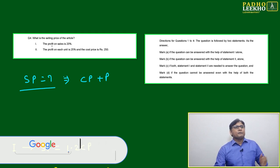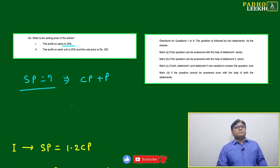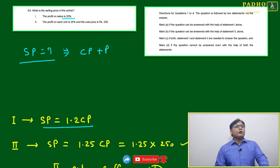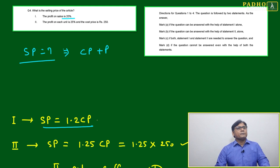Now, Statement I: profit on the sales is 20 percent. 20 profit is there means we can say selling price will be equal to 1.2 cost price. That is 20 percent profit, but based on that...